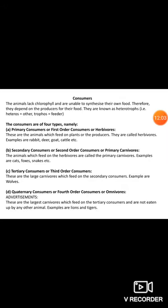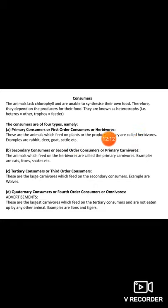Primary consumers come in the first stratum of the ecological food pyramid. These are animals which feed on plants or producers, and something that feeds on plants is called a herbivore. Best examples are rabbit, deer, goat, and cattle.